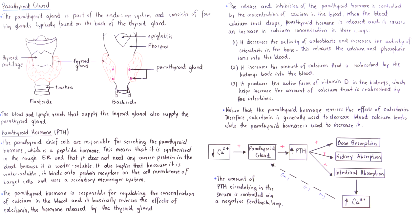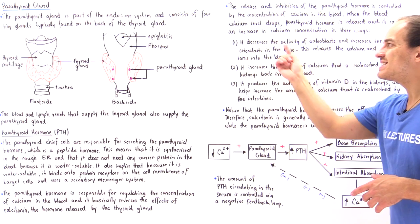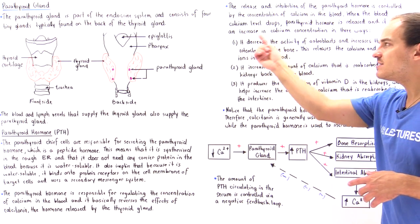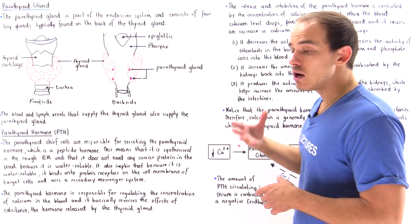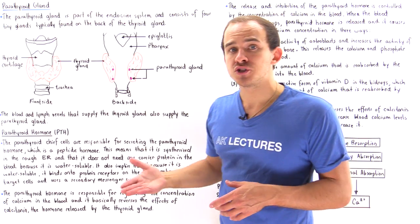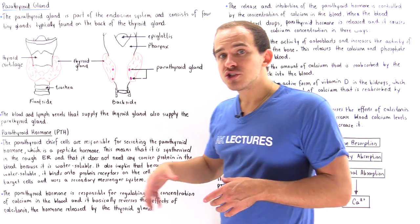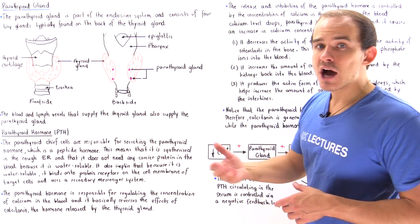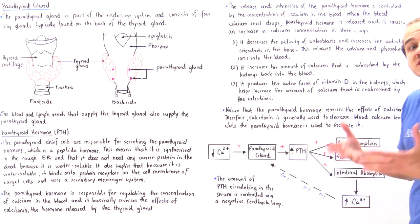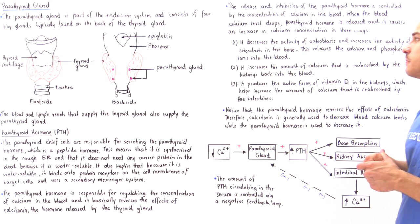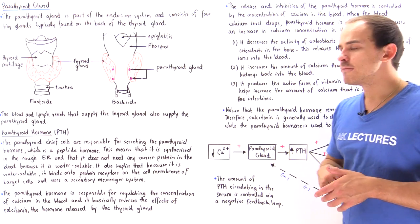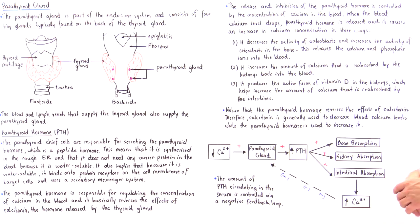What our parathyroid hormone does is it increases the activity of osteoclasts, meaning it increases the rate of resorption of bone. So we break down more bone matrix and we release more calcium into our blood, thereby increasing the concentration of calcium in our blood.